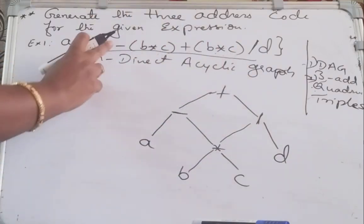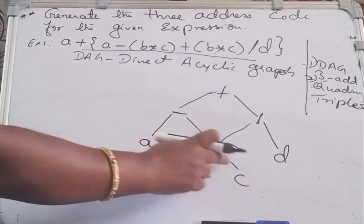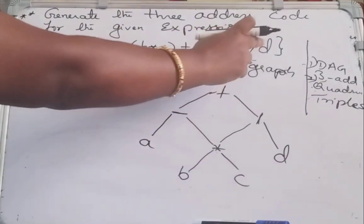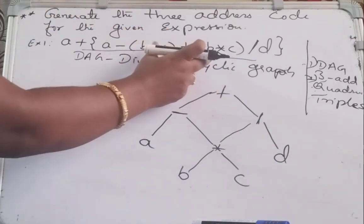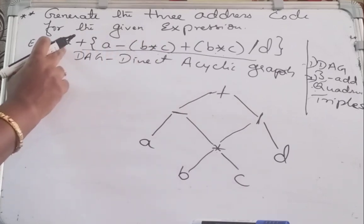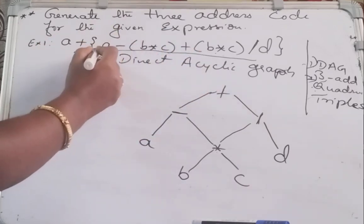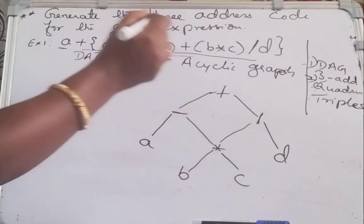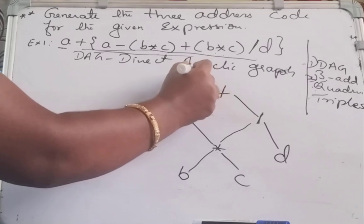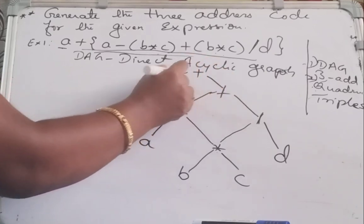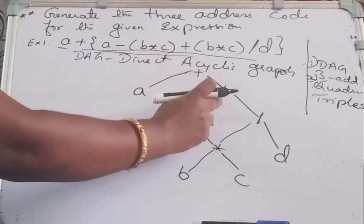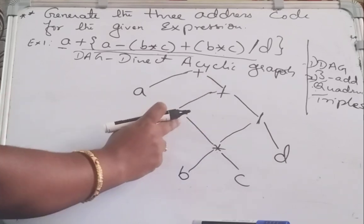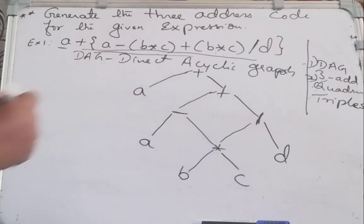So what I got now is A minus B star C, plus B star C slash D. This same term is added to A plus the whole expression — A plus the entire thing. One more node is included here: plus the result of this, and the leaf node is A. So this is A plus. Here we have plus, minus, division, and star. This is how we constructed the DAG.